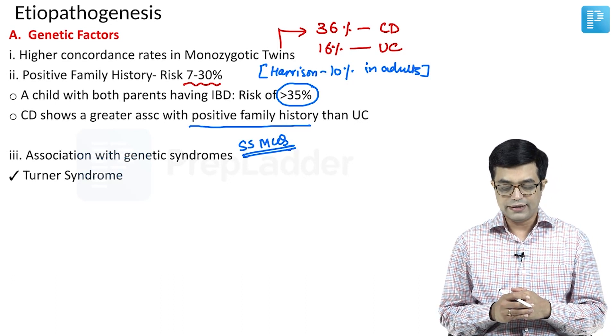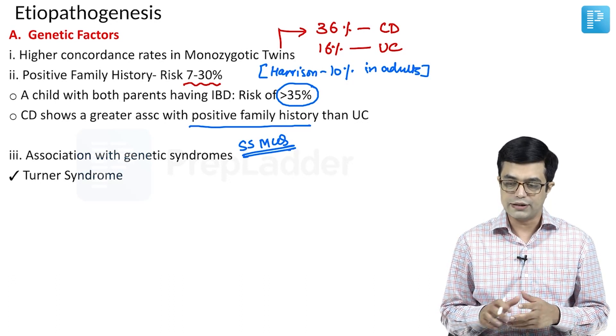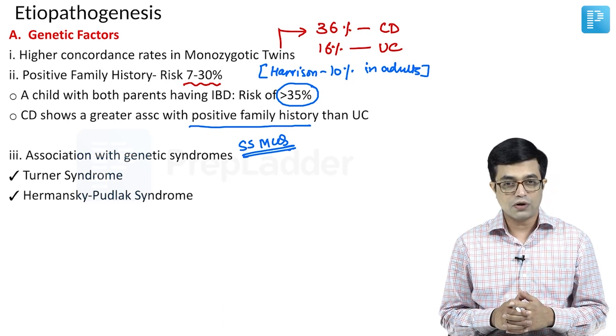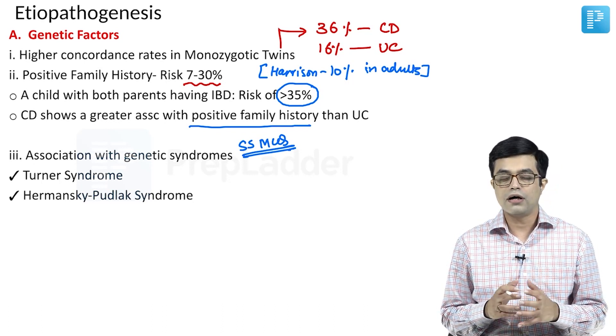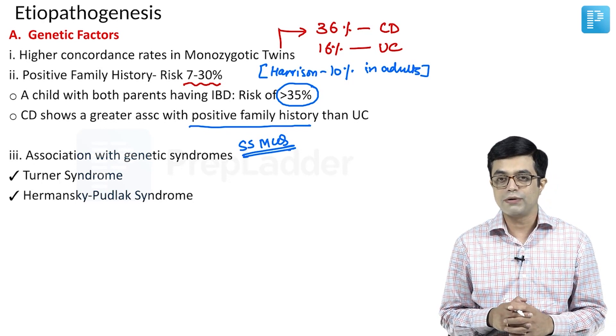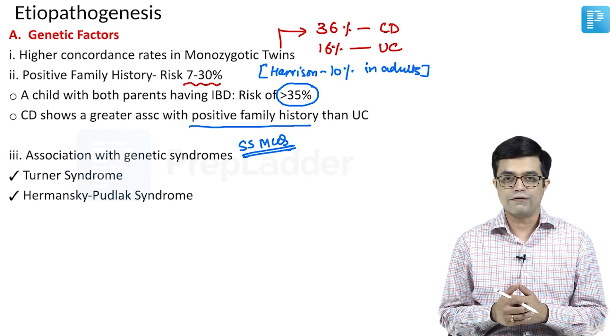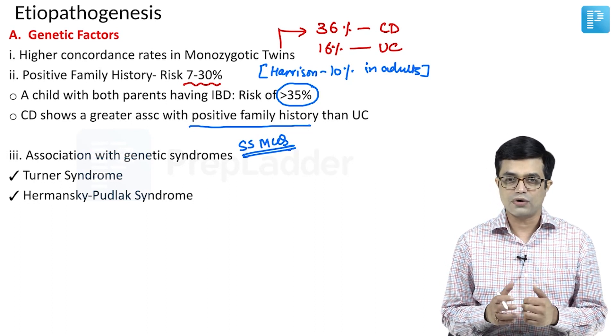Turner syndrome is a frequent association of these inflammatory bowel diseases. Secondly, Hermansky-Pudlak syndrome. If you remember, we have already talked about this in a separate module. Hermansky-Pudlak syndrome patients will have albinism, they will have bleeding disorders and they will have increased risk of developing ulcerative colitis and Crohn's disease.